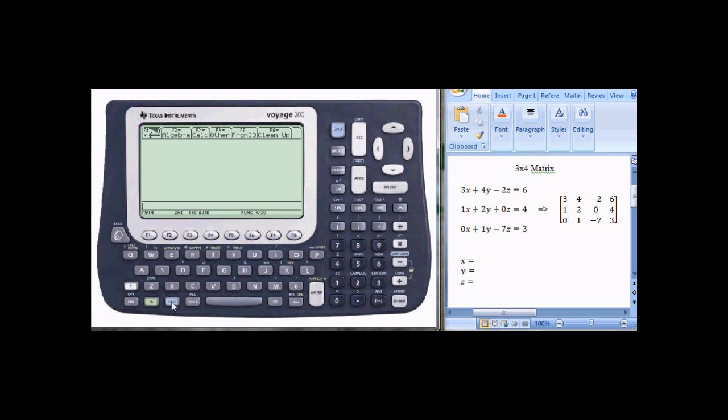Now from here, I'll press 2nd and 5. The math menu is over 5. Scroll down for matrix. Scroll over, and scroll down to reduce row echelon form and press Enter. I'll now refer back to M1 by pressing M and 1. Close parentheses. And Enter.